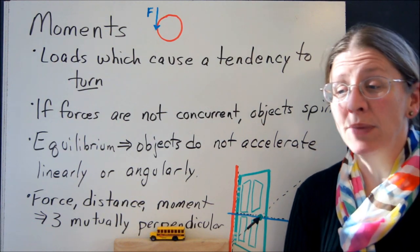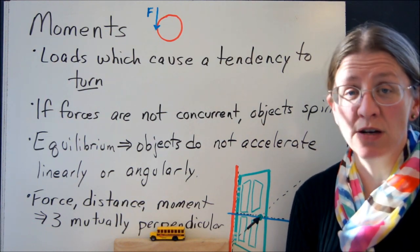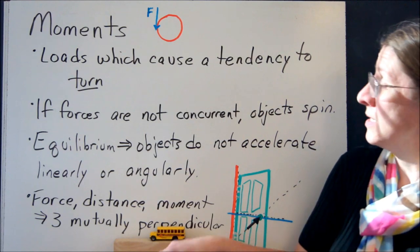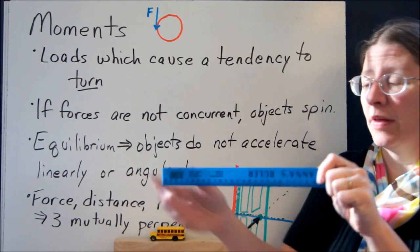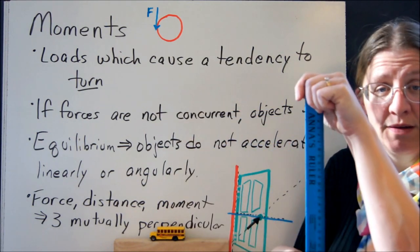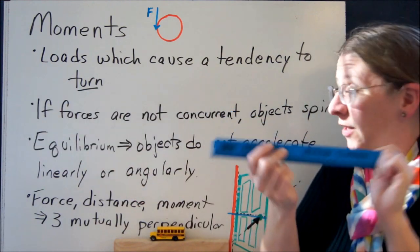A moment is some kind of load that acts on an object that causes a tendency to turn. So in general, we're talking about something that makes this thing spin, even if it's not accelerating linearly.